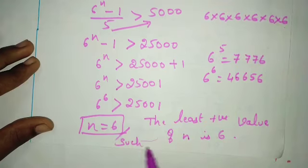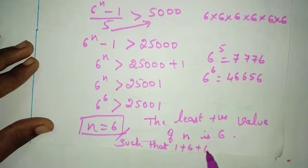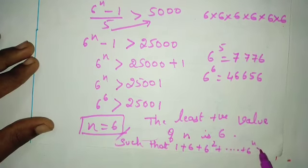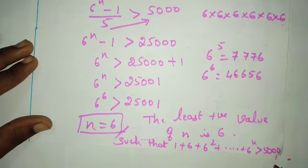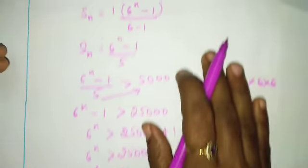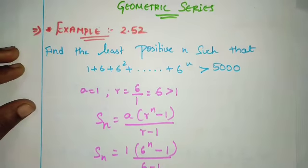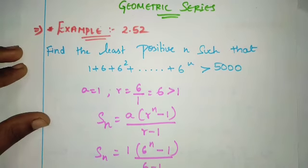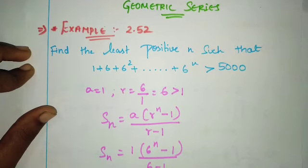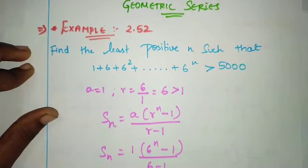So finally, for the series 1 plus 6 plus 6 square plus up to 6 power n greater than 5000, we solved and got n equals 6. If you have any doubt, mention in the comment box and I will explain again. Thank you so much.